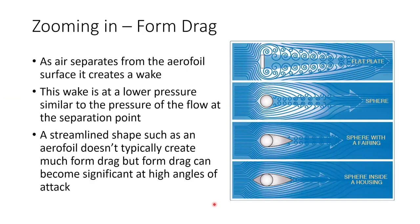There is another cause of drag as well, which is form drag. As air separates from the aerofoil surface, particularly near the trailing edge, it creates a wake. This wake is at a lower pressure than the airflow around the aerofoil, so it sucks the aerofoil backwards and applies drag. At high angles of attack — such as with a steep pitch propeller or an aircraft flying steeply — the airflow will separate further up the wing, creating a larger wake and applying more drag.